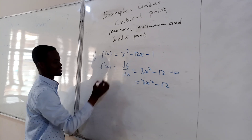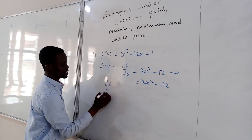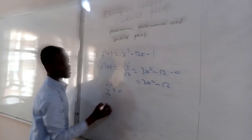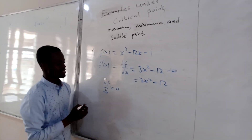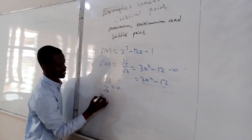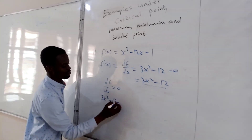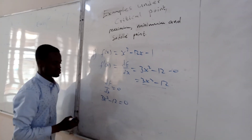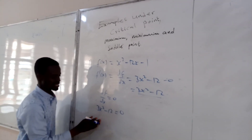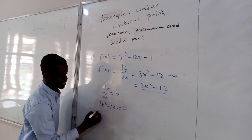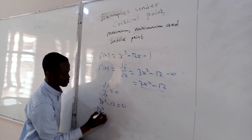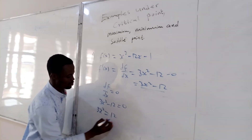We know that for a critical point, df/dx is equal to 0. So we set the whole expression equal to zero: 3x² minus 12 equals 0. From here, we try to find x as the subject. So 3x² equals 12.